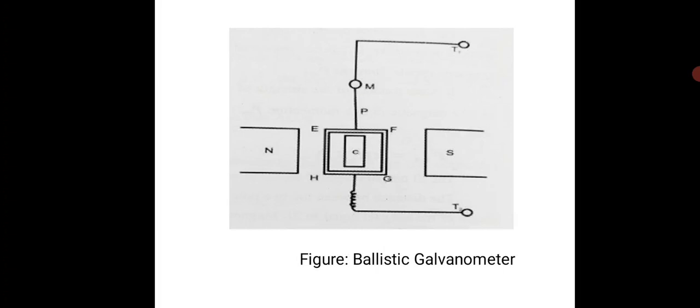There is a lamp and scale arrangement in front of the coil to note down the deflection of the galvanometer. From this deflection, we can measure the moment of inertia of the coil. Using this, we can calculate the charge sensitivity of the ballistic galvanometer.